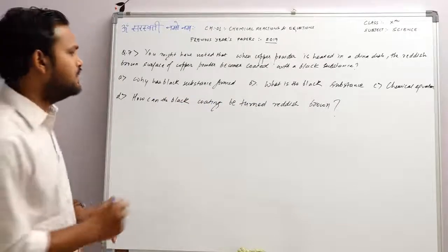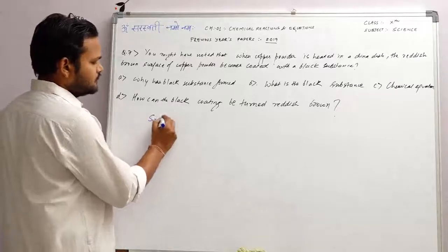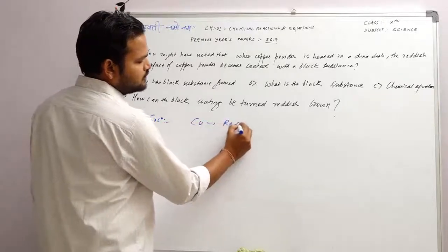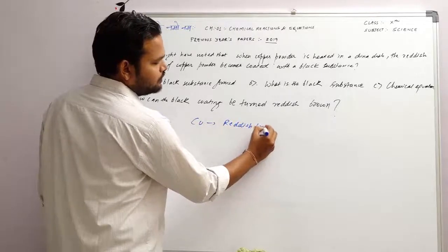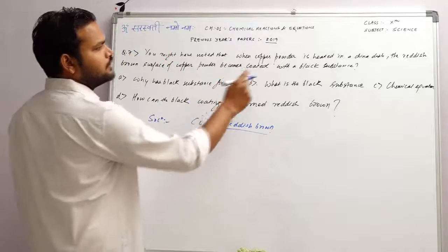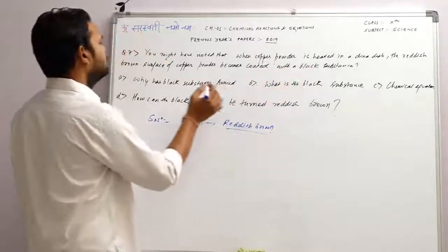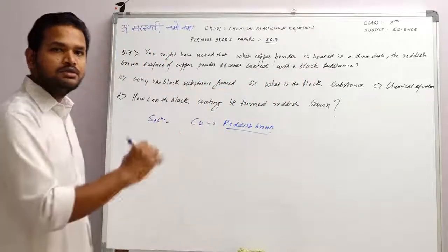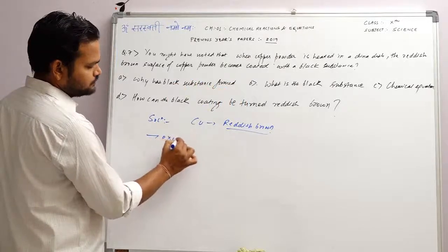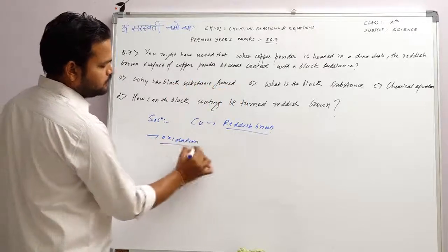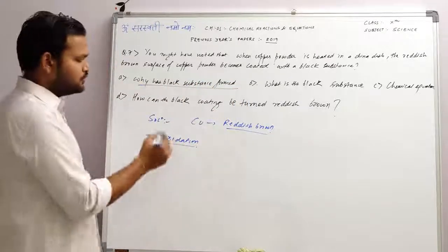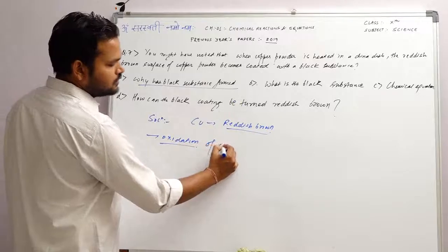First of all, the most important thing is that copper is reddish brown in color. Copper gets a black coating due to oxidation. Why has the black substance formed? That is due to oxidation of copper.